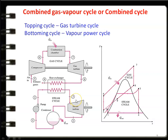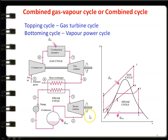When answering questions on the combined cycle, draw the layout and temperature-entropy diagram and explain the cycle. The Brayton cycle and the Rankine cycle were studied separately; combining them gives the combined gas-vapor power cycle, or simply the combined cycle.